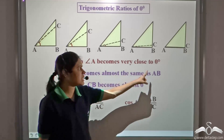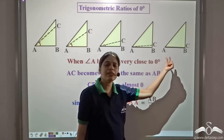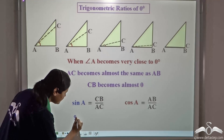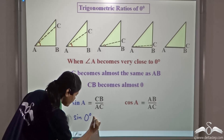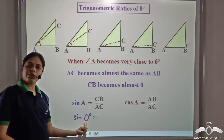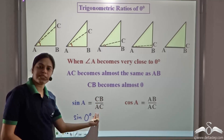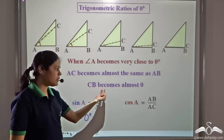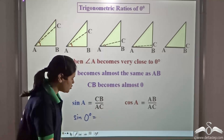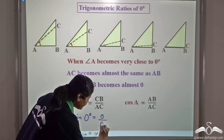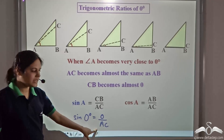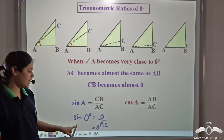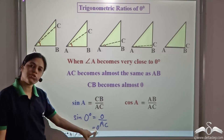Now let us consider this case when angle A is very close to zero. We can write this as sin zero degree. Sin zero degree is equal to CB by AC. But when angle A is almost equal to zero, then CB also becomes almost equal to zero. So I can write this as zero by AC. Zero by anything is zero, so sin of zero degree is equal to zero.